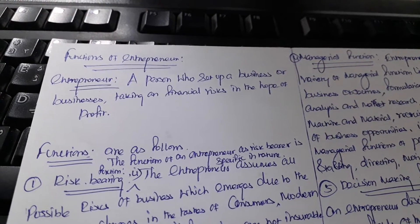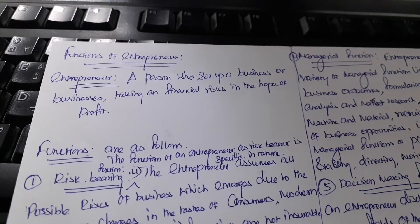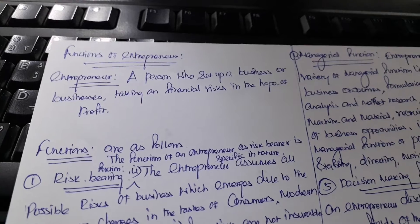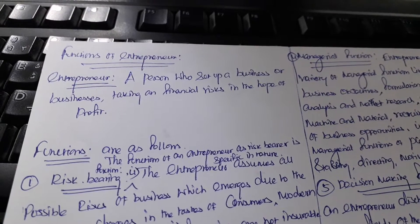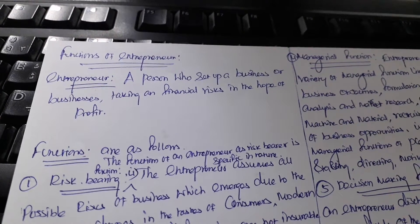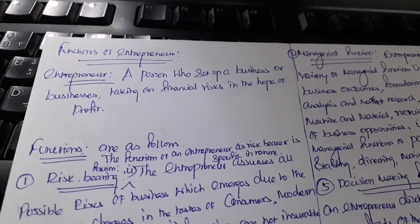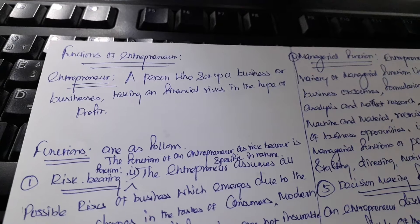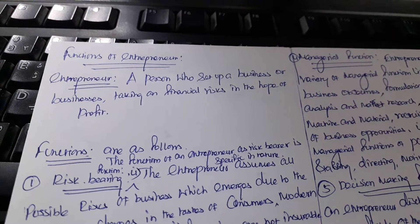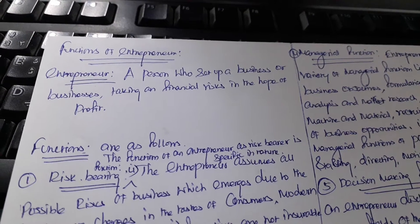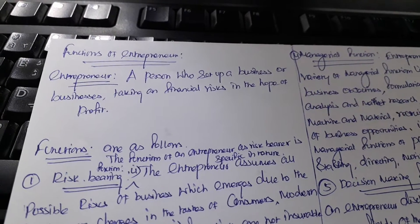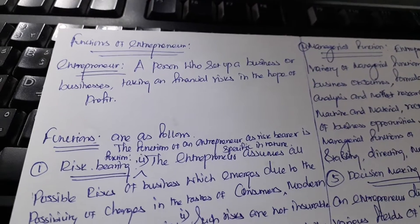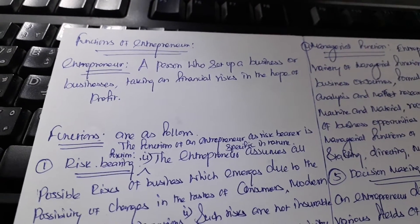Entrepreneur is the person who sets up a business or businesses, taking on financial risks in the hope of profit. Entrepreneur is a human being who sets up a single business or a group of businesses in which he has to face a lot of financial risks and uncertainties. Eventually, his motive is to make a profit out of businesses. He is called an entrepreneur.